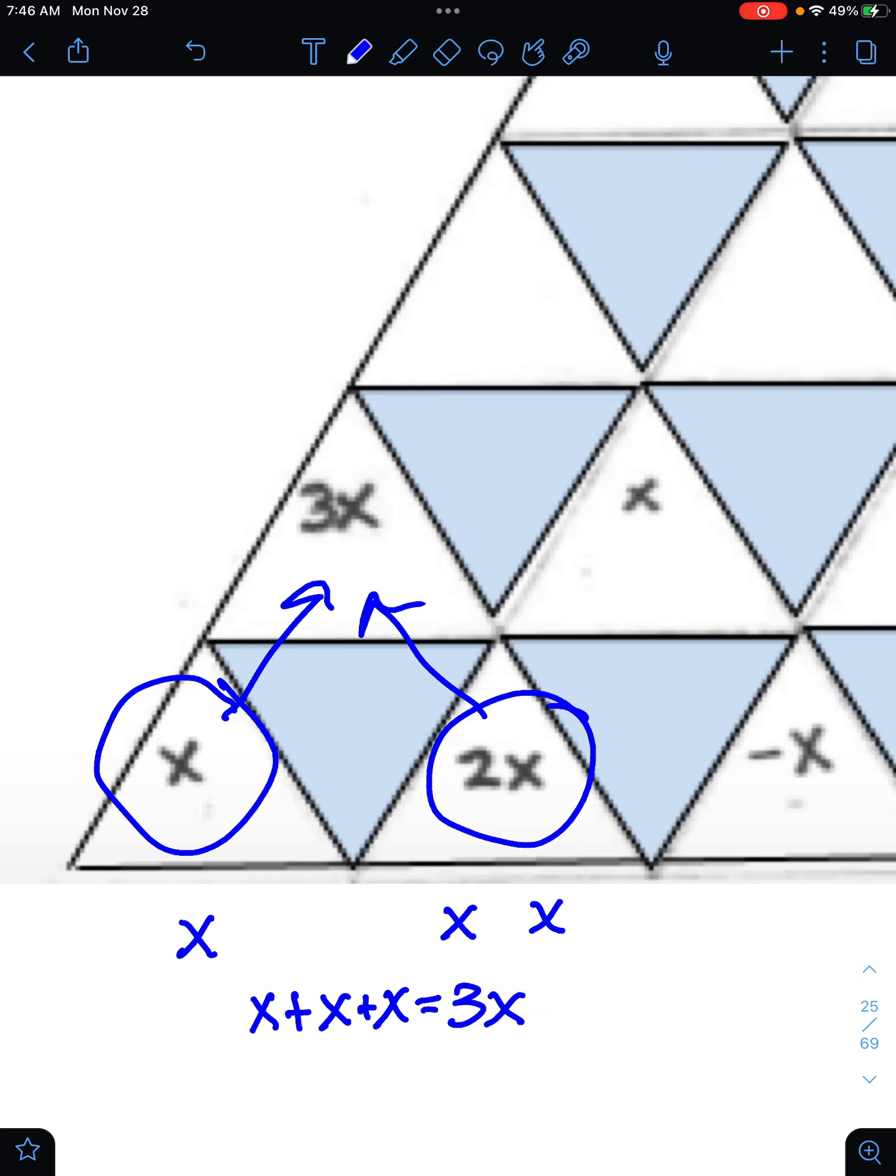We're allowed to do that because these are like terms. They have the same variable, which is x, to the same power, which is that they don't have an exponent at all. So they have the same variable and no exponent. So you're allowed to combine them.